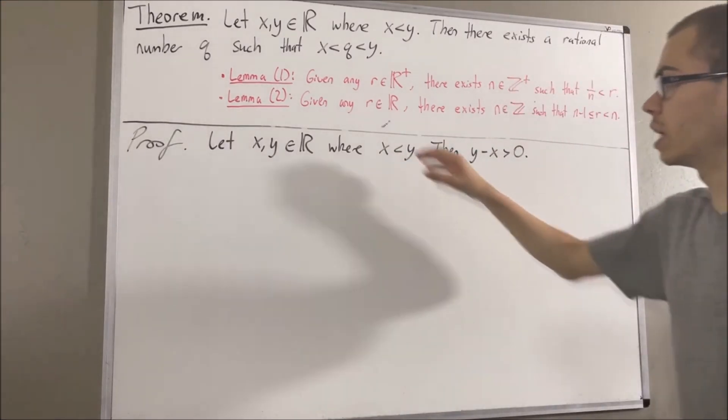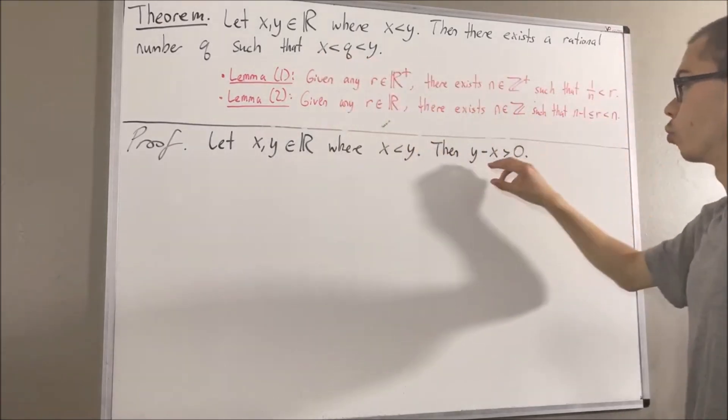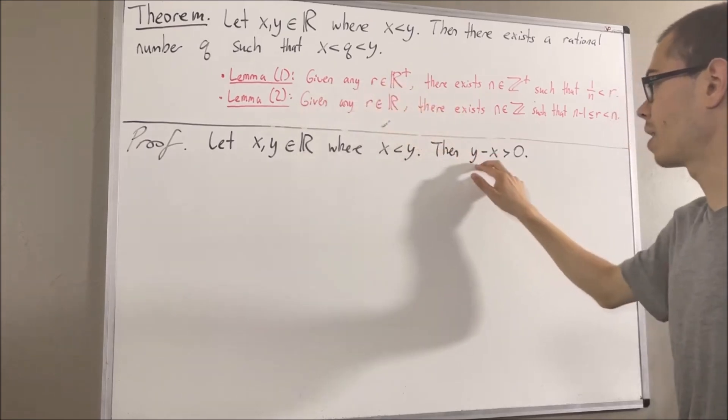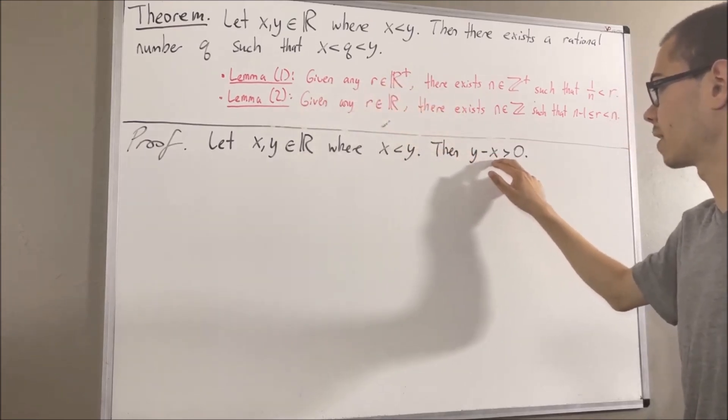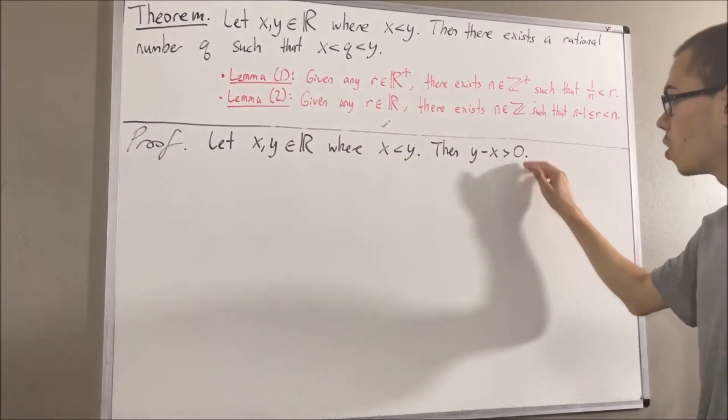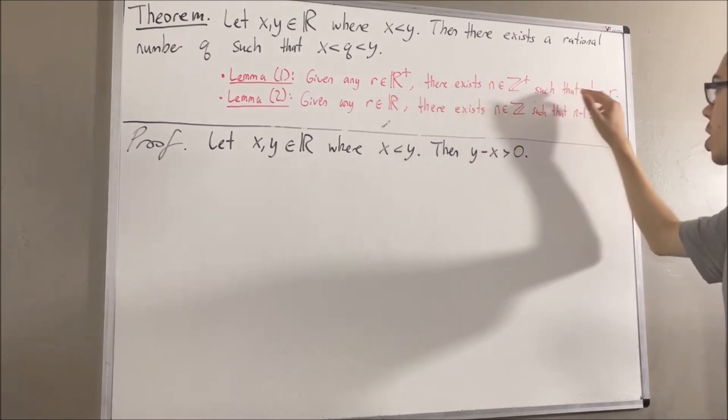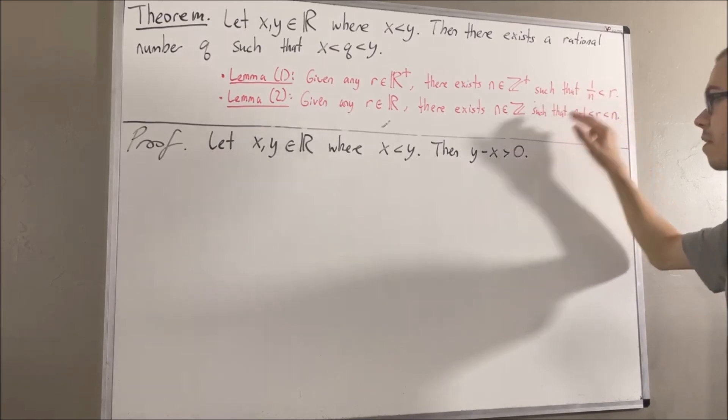But then we can apply lemma 1 to the real number y minus x. Because if we take r to be y minus x, well, y minus x is a positive real number. So there is a positive integer, I'll call n, such that 1 over n is less than y minus x.